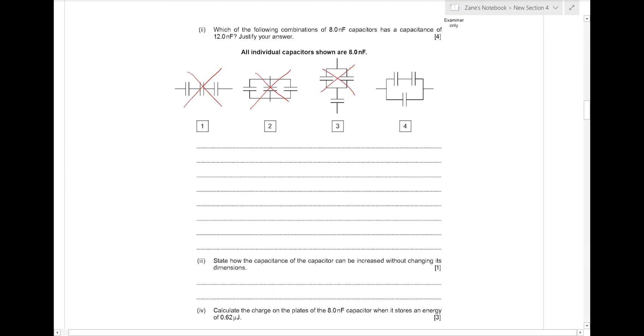So it must be combination number 4. But let's show the workings. So the first bit is if we work out the capacitance of the series arrangement, it's going to be 1 over 8 plus 1 over 8, which is 2 over 8 or a quarter. And that means that the series arrangement is 4 nF.